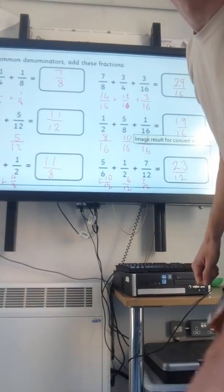And then the actual final one. 16 is our common denominator. Times it by 8. Times it by 2. Times it by 1. We've got 19 sixteenths.